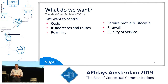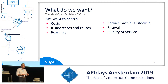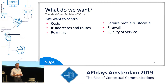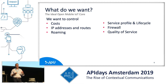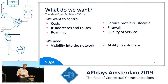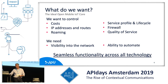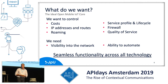What is this ideal open mobile IoT core doing? For the people delivering services, or even enterprises, they want more control over cost, roaming, firewall, security policy settings — the things they need access to for connected devices. They need more visibility into the network, which historically MNOs weren't giving you. They want the ability to automate. And at the end of the day, that provides seamless functionality across all technologies — whether 2G all the way to 5G. It's the same set of APIs. That's the goal.